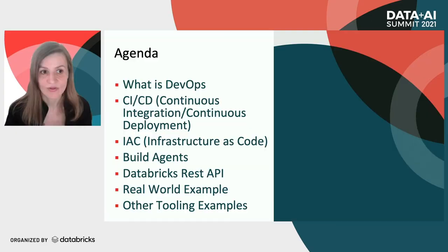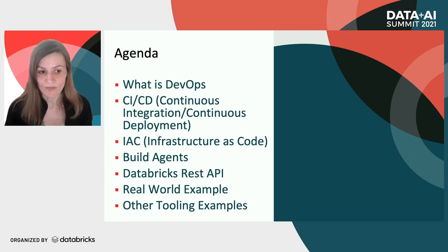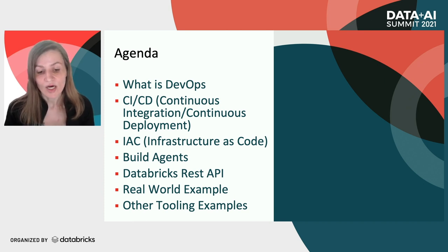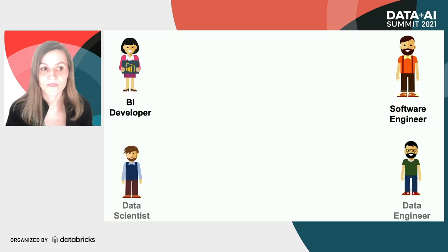Our agenda: we're going to look at what DevOps is, CI/CD — continuous integration and continuous deployment — IaC, infrastructure as code, build agents, the Databricks REST API, a real world example, and then some other tooling examples.